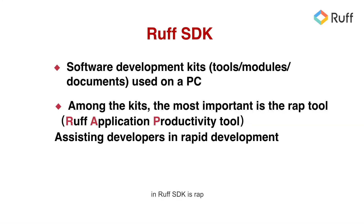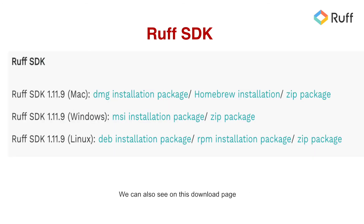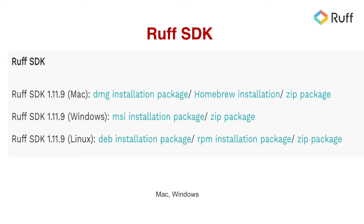The most important thing in RUF SDK is RAP. RAP is actually an auxiliary tool which assists developers in development. For example, it manages some of the hardware and manages some of the corresponding software packages. We can also see on the download page that our present RUF SDK supports three types of common operating systems: Mac, Windows, and Linux. And there are many installation methods on each platform.